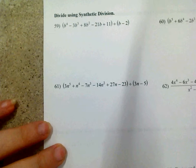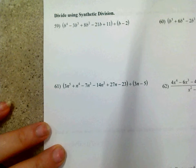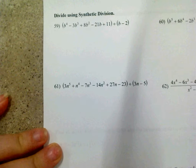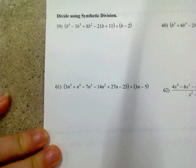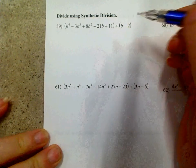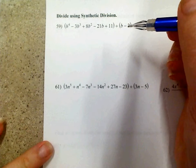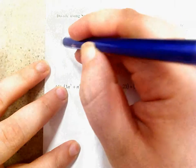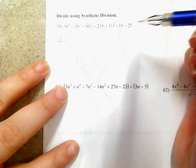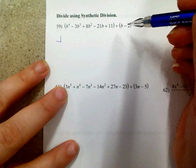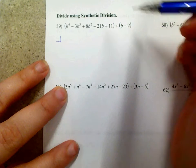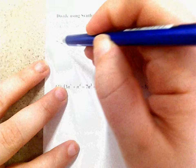Page 8 starts with dividing by synthetic division. I need to divide this quartic by b minus 2. In the little half box, we're going to put the root of b minus 2 — whatever makes that equal to 0 — so we're going to put 2 in there.